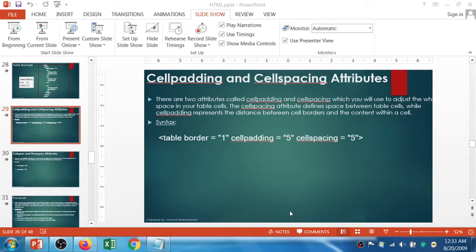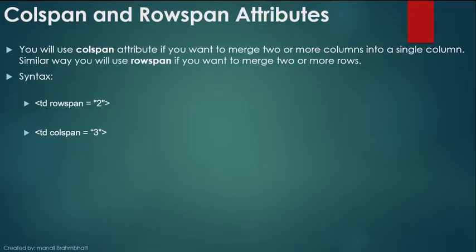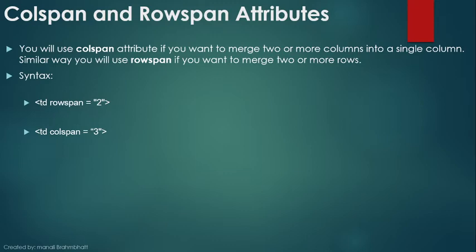Welcome to the new episode of HTML Practical. In this session I'm going to discuss the colspan and rowspan attributes of the table element in HTML. If you want to merge any two cells — a row or a column — into a single column or single row, you can use the colspan and rowspan attributes.